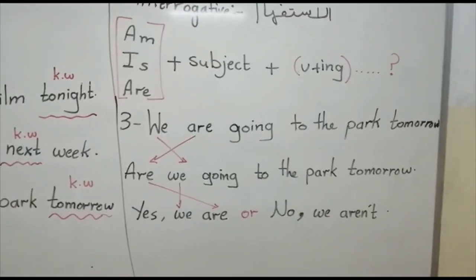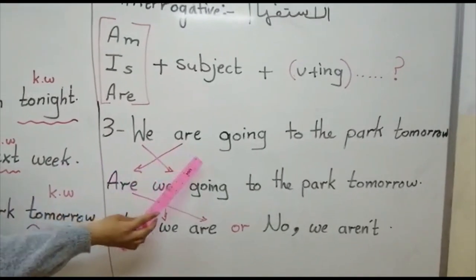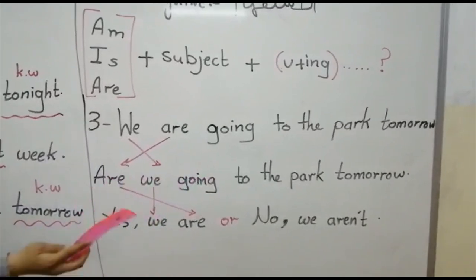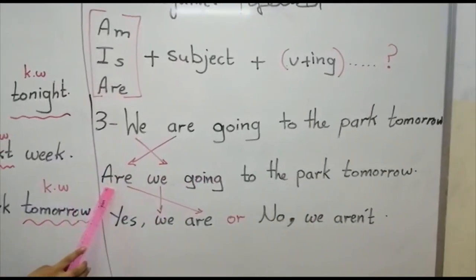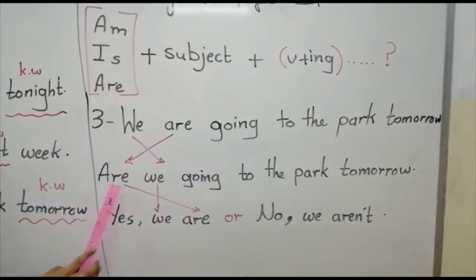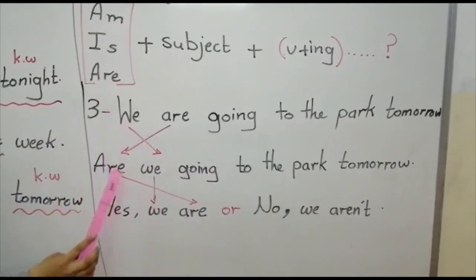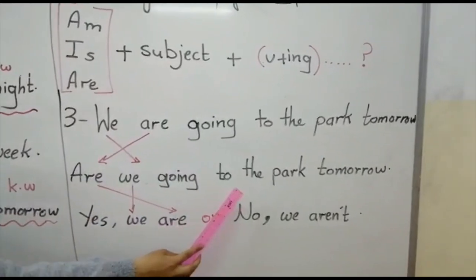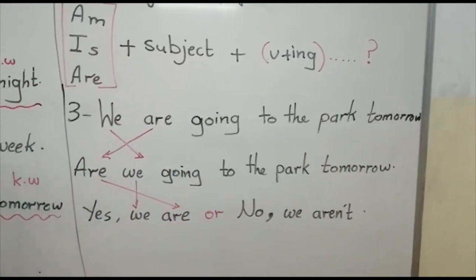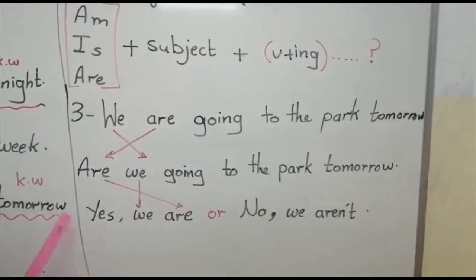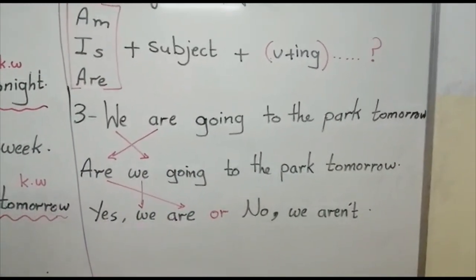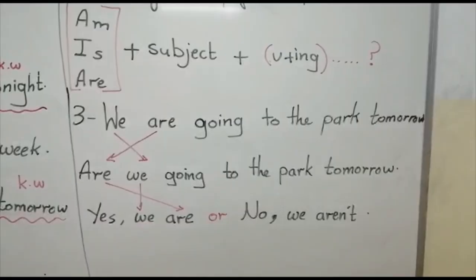For the third sentence, 'We are going to the park tomorrow.' First, put 'are' as the helping verb. Then: we are going to the park tomorrow. You should answer: Yes, we are. Or: No, we are not.